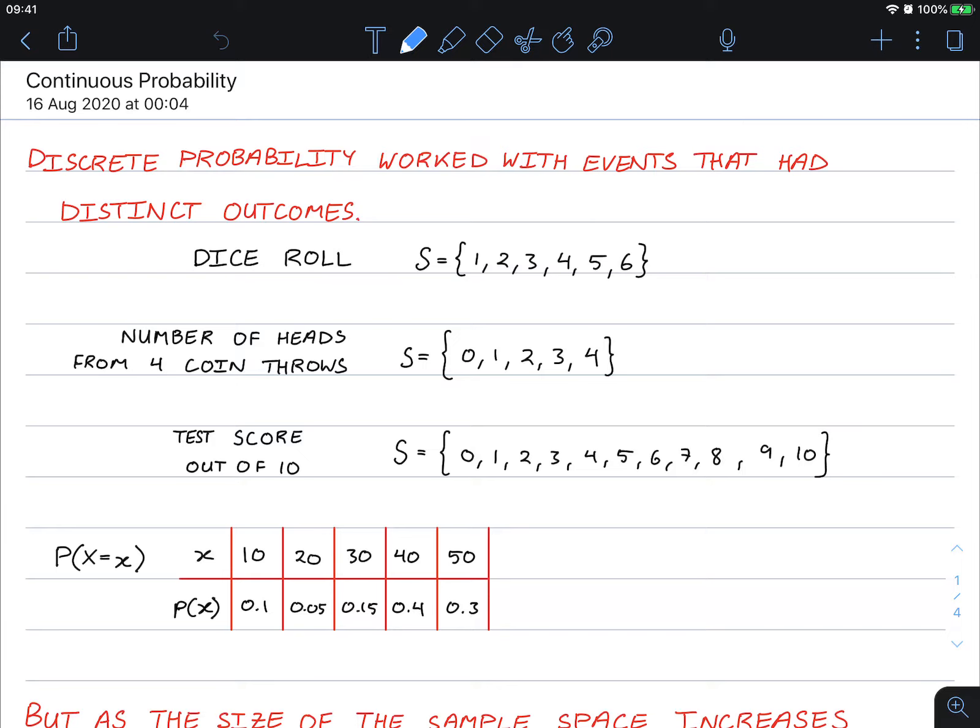Hello class, this is a video tutorial on continuous probability. Discrete probability worked with events that had distinct outcomes. For example, on the dice roll you could only get one, two, three, four, five, or six as your results.